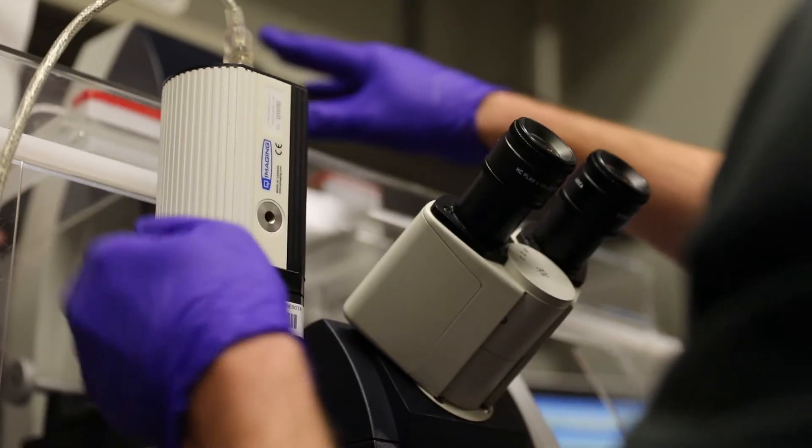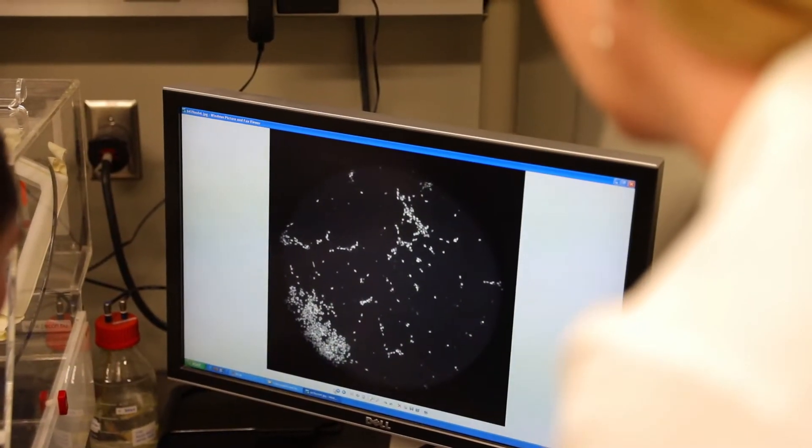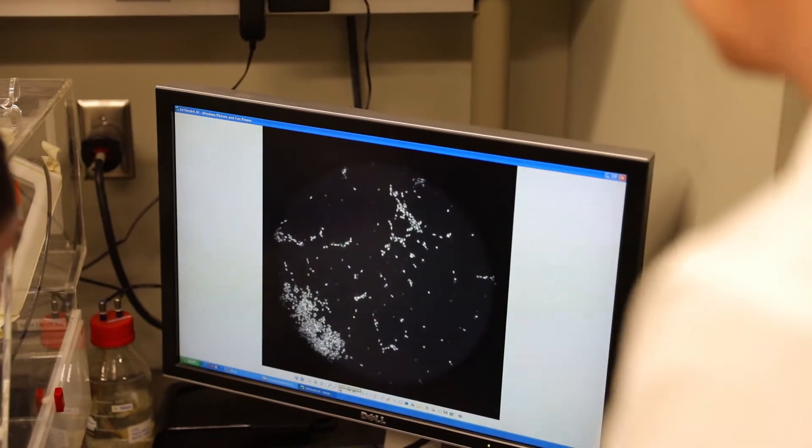One avenue that we're taking is to investigate the potential role of stem cell transplantation for spinal cord injury. In particular, we're interested in a specific cell type called the oligodendrocyte, which we're attempting to generate in our lab using different methodologies.